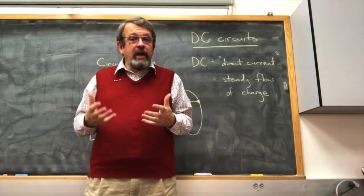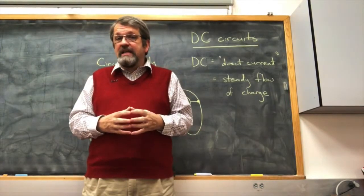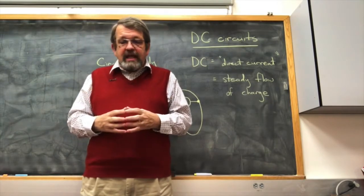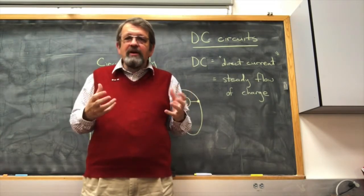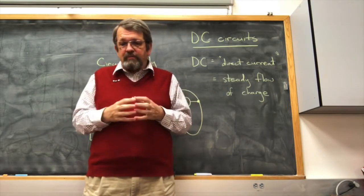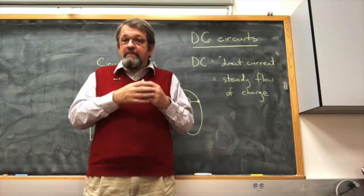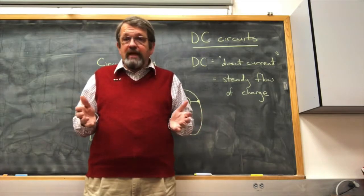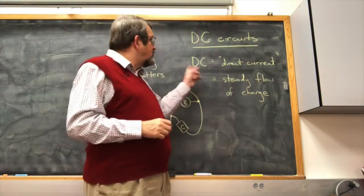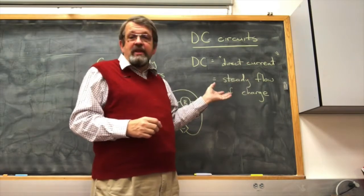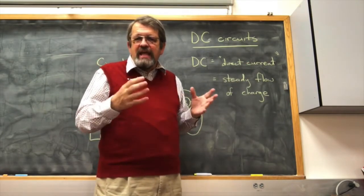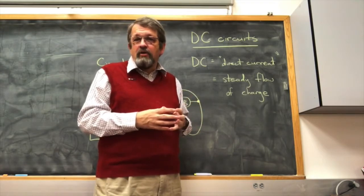This lecture is a quick first look at DC circuits. A circuit is a connected network of electrical devices connected by wires, and electric charge can move through the wires — that's electric current. DC means direct current, which means the flow of charge through the wires, the electric current, is steady and not changing rapidly over time.